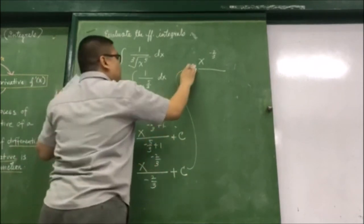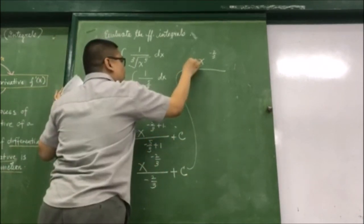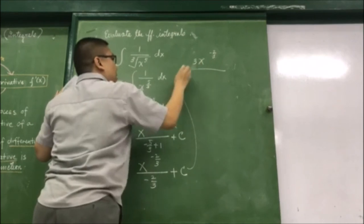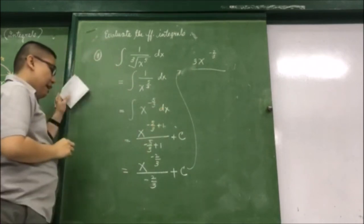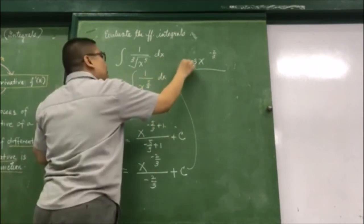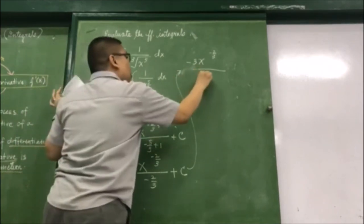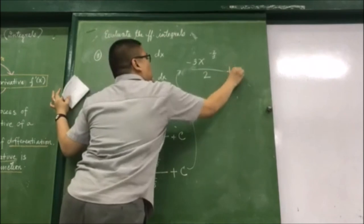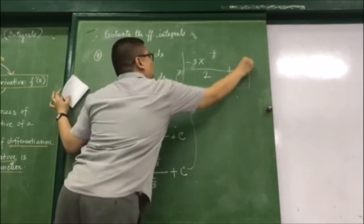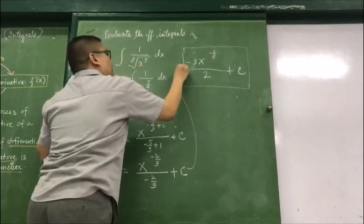Negative 2 thirds. This becomes negative 3x to the negative 2 thirds over 2, and then plus C.